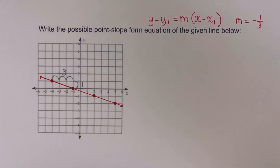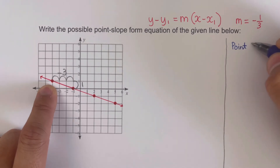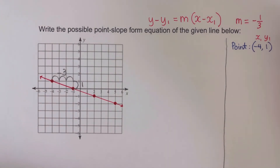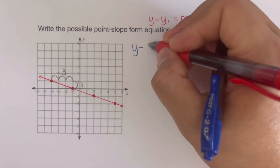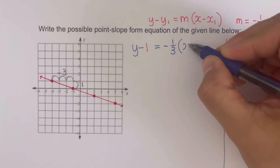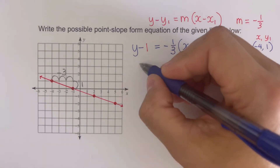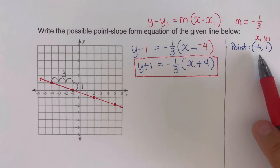Now we write the possible equations for this line in point-slope form. Starting with the first lattice point, negative 4, 1 — this is our x₁, y₁. Plugging in: y minus 1 equals negative one third times the quantity x minus negative 4. This is a possible equation for this line using the point negative 4, 1.